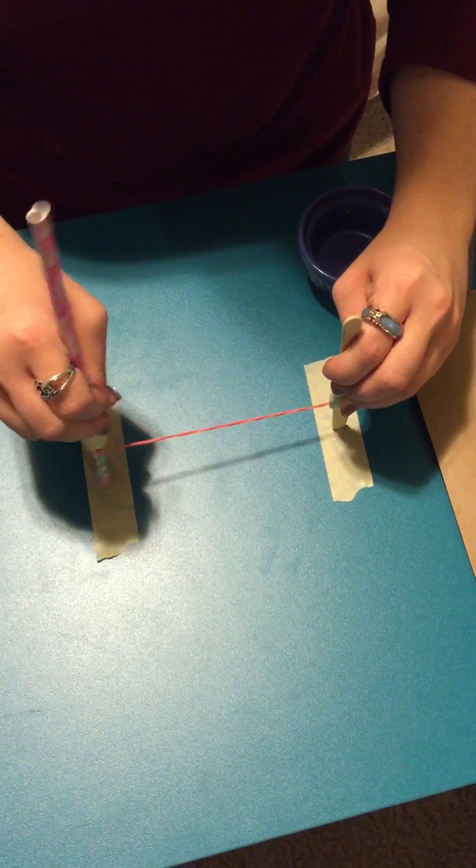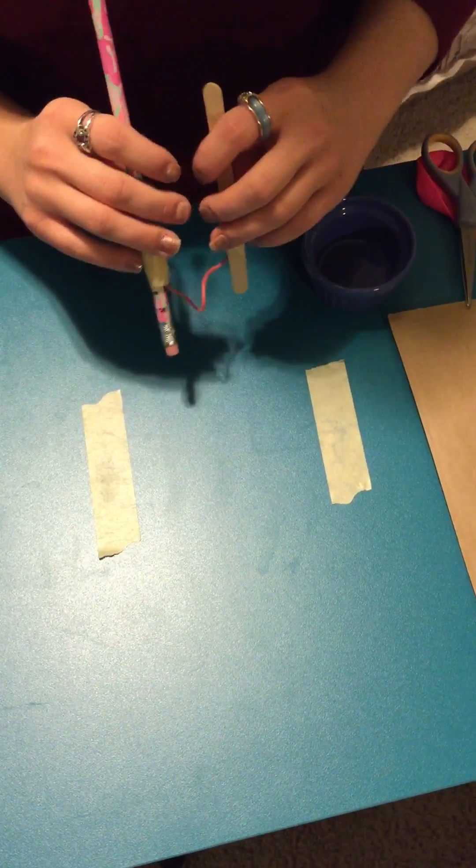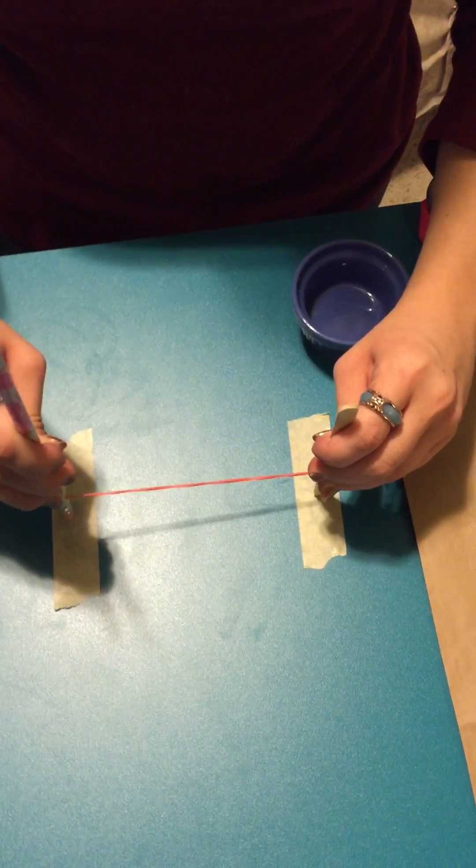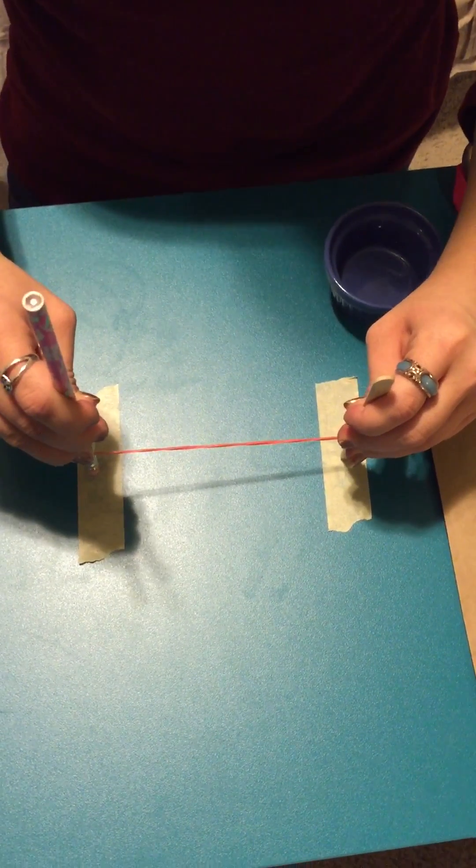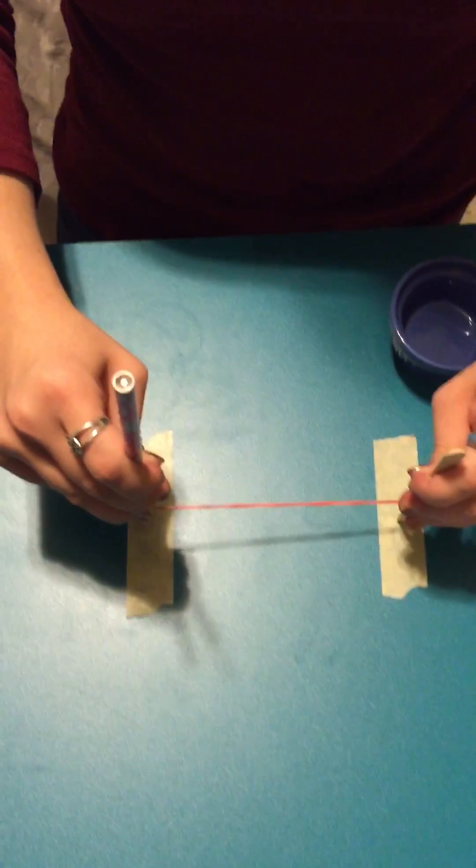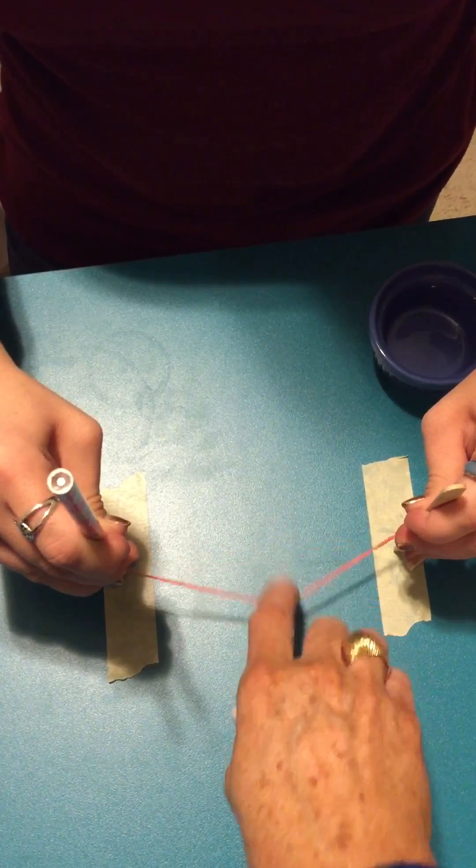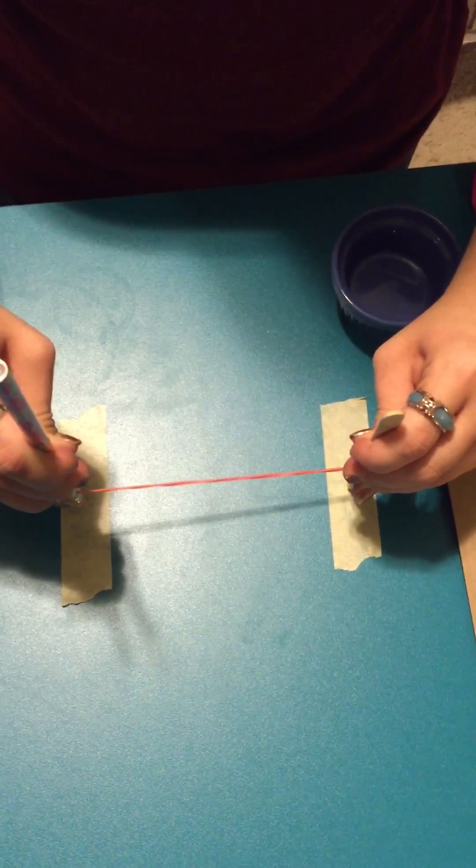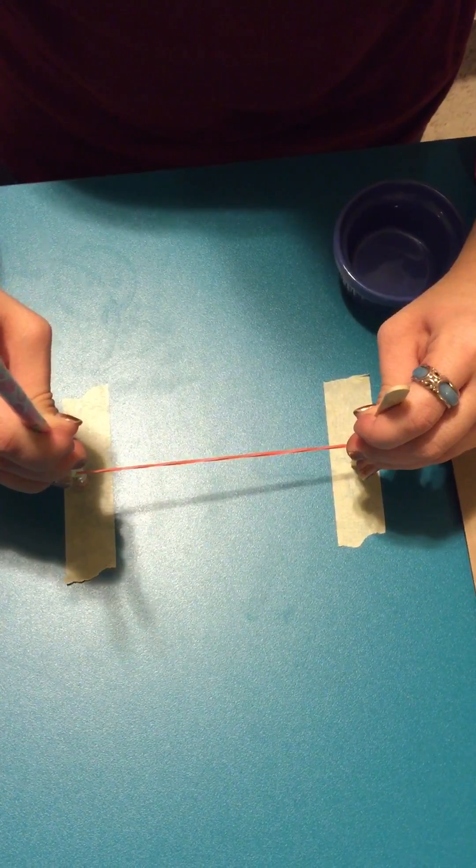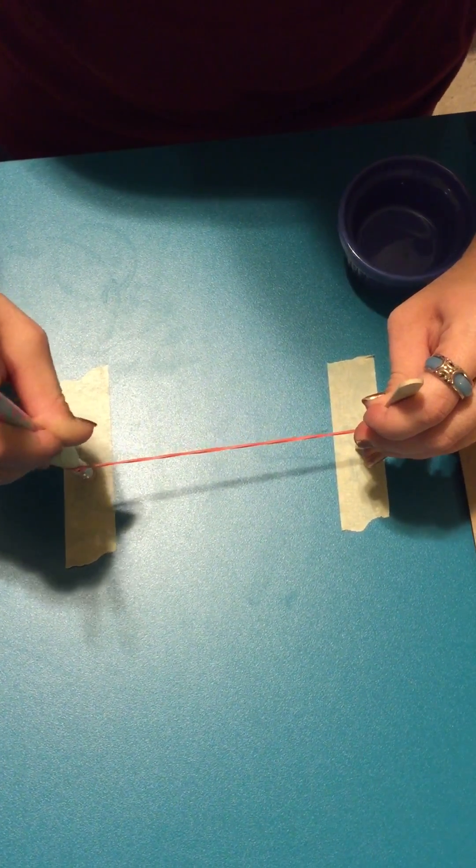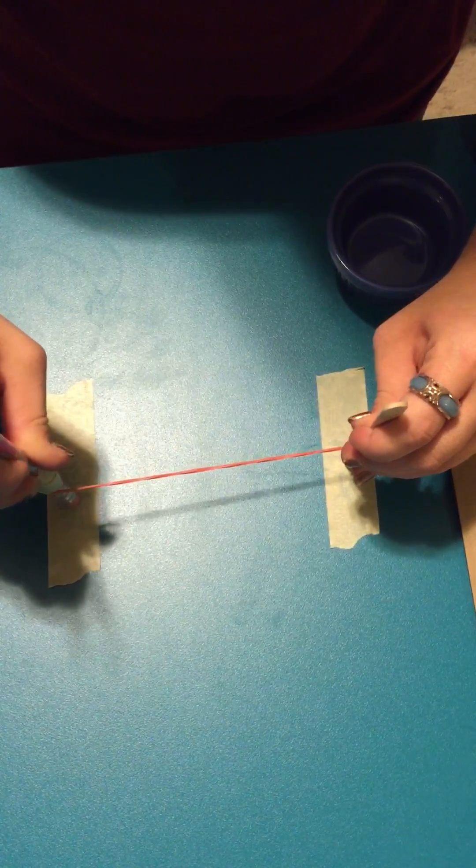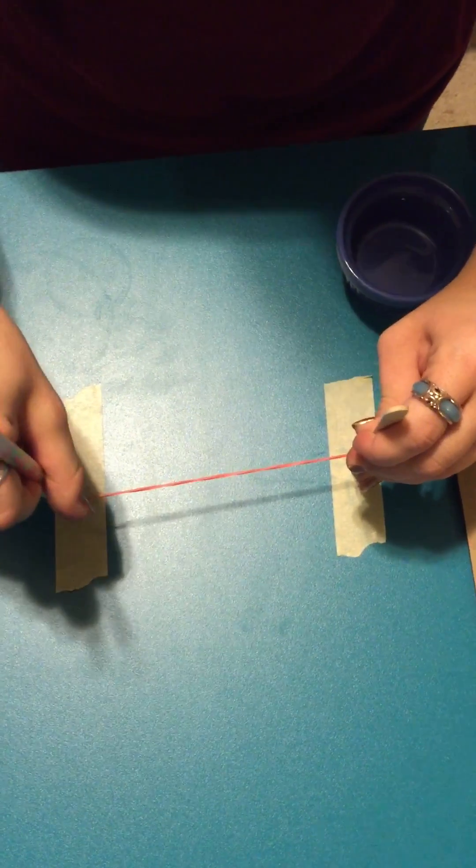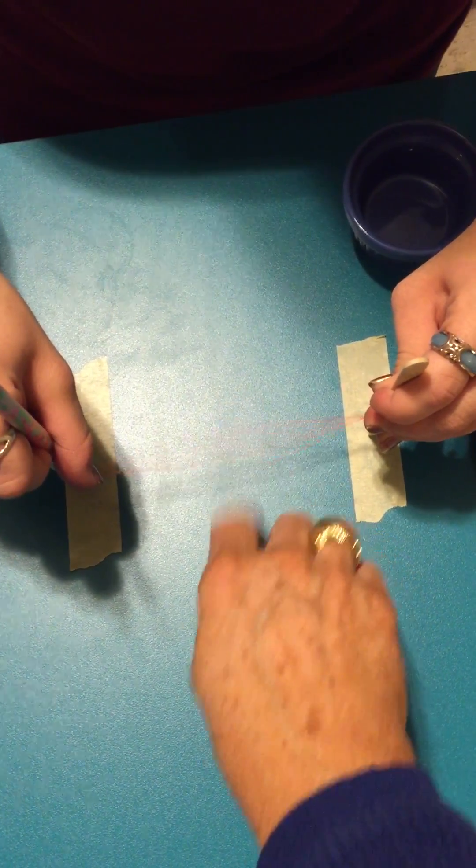We are going to go ahead and test the experiment. So I'm placing my pencil and tongue depressor down on the masking tape. I am going to go ahead and pluck the string. You should hear the vibrating object making a sound. Now I'm going to increase the tension by winding up the pencil.